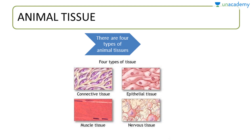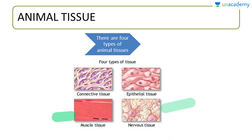There are four types of animal tissue broadly speaking: connective tissue, epithelial tissue, nervous tissue and muscle tissue. We will learn in detail about each one of them.